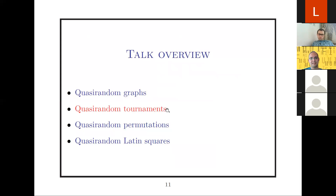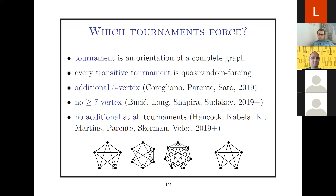A tournament is just an orientation of a complete graph. Transitive tournaments are ones where one can number the vertices so that all edges go from smaller to larger numbered vertices. A sequence of tournaments is quasi-random if the density of every sub-tournament converges to its expected density in a truly random tournament — a tournament where every edge is oriented randomly. It is well known that transitive tournaments force quasi-randomness: if the density of a transitive tournament on at least four vertices converges to its expected density, which is k! / 2^(k choose 2), then the tournament sequence is quasi-random.